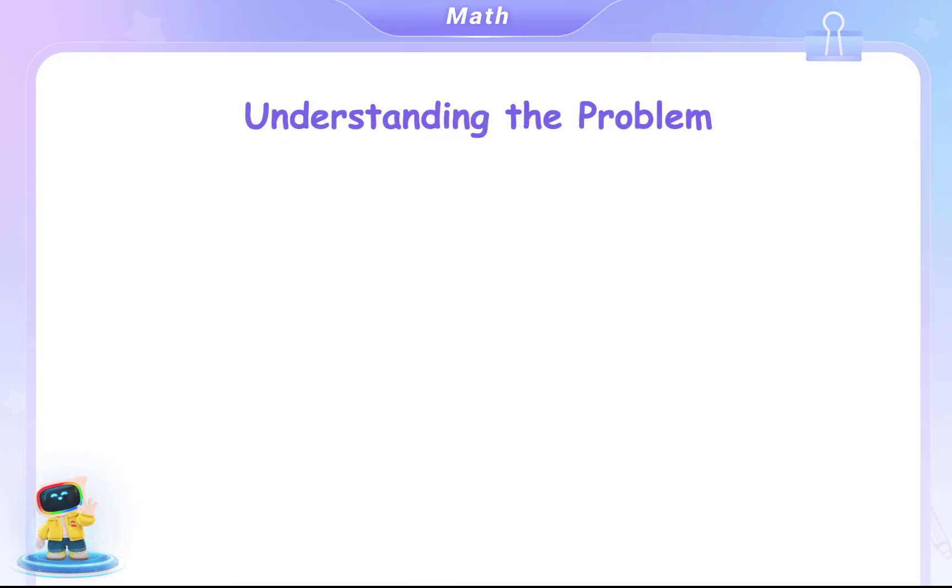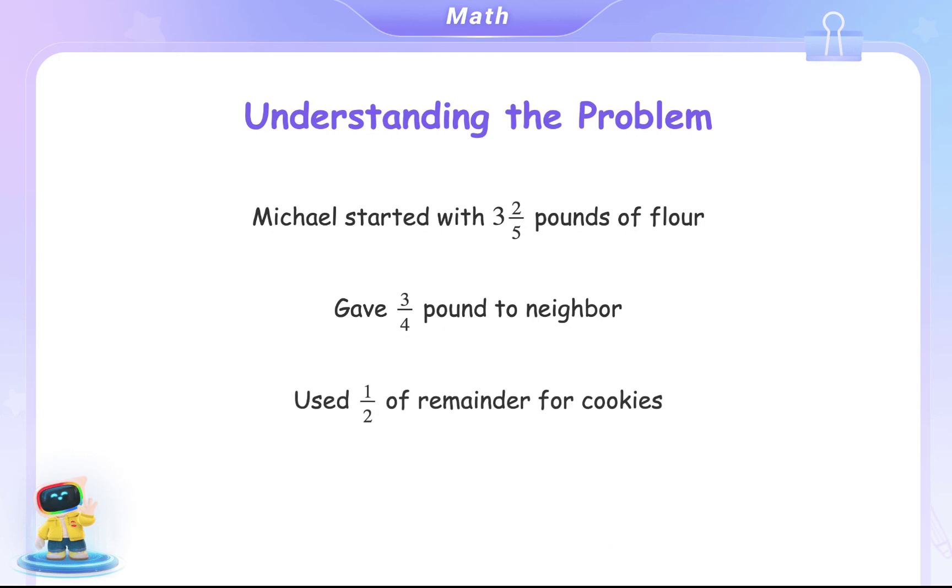Let's understand what we know from the problem. Michael started with 3 and 2 fifths pounds of flour. He gave 3 quarters pound to his neighbor, then used one half of what was left for cookies.